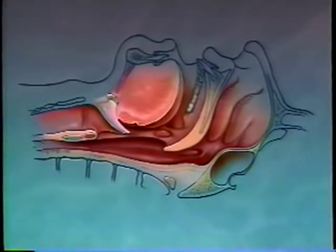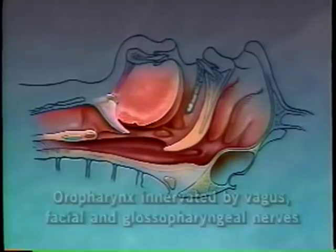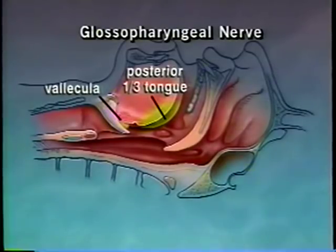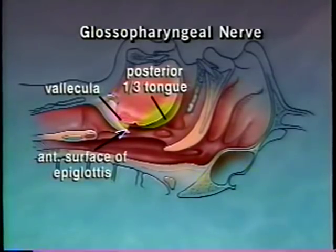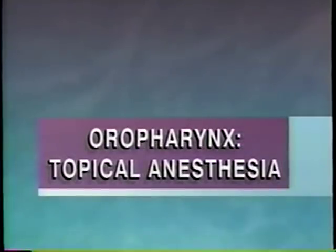The oropharynx is a commonly used route for awake intubation. The somatic and visceral afferent fibers of the oropharynx are supplied by the vagus, facial, and glossopharyngeal nerves. The glossopharyngeal nerve supplies sensory innervation to the posterior third of the tongue, follicular anterior surface of the epiglottis, posterior and lateral walls of the pharynx, and the tonsillar pillars. Techniques available for applying topical anesthetics include use of sprays, atomizers, and nebulizers.